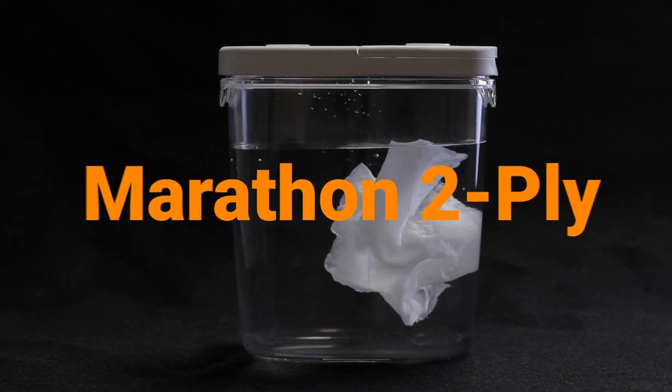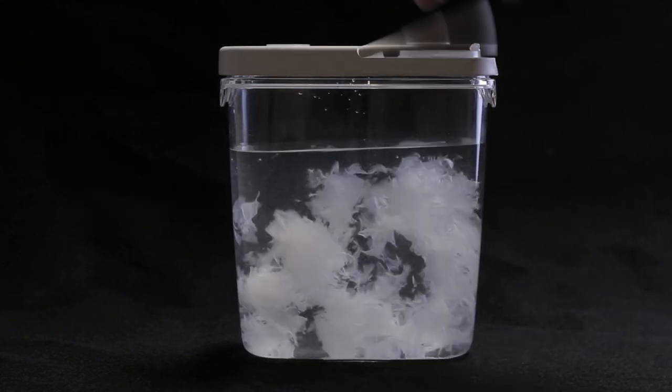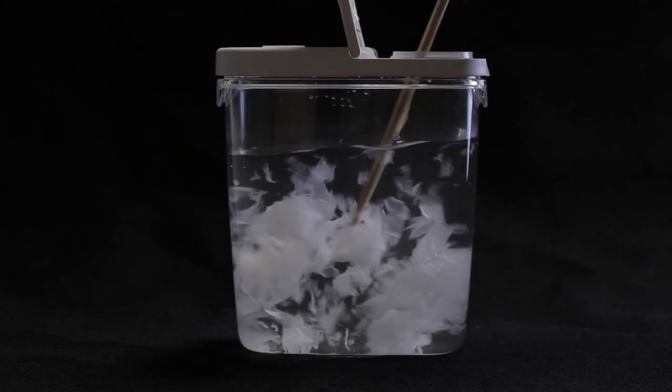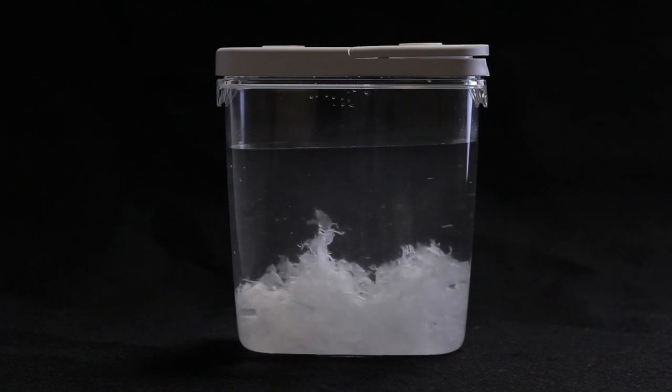Marathon 2-ply was cheap and broke apart well but you will not be happy when using it. Super Soft by Royal Paper was the cheapest toilet paper I could find at the 99 cent store. It was like using ultra thin sheets of sandpaper.